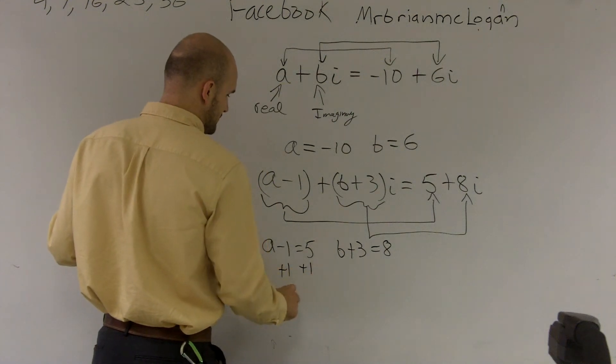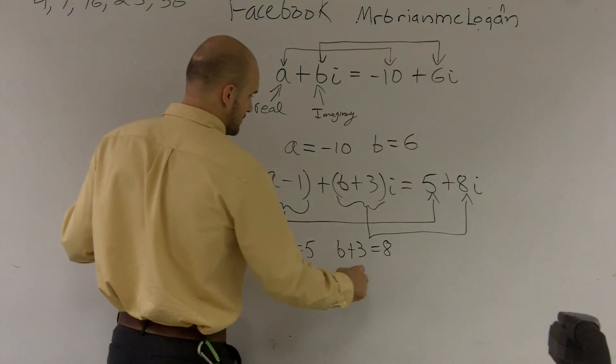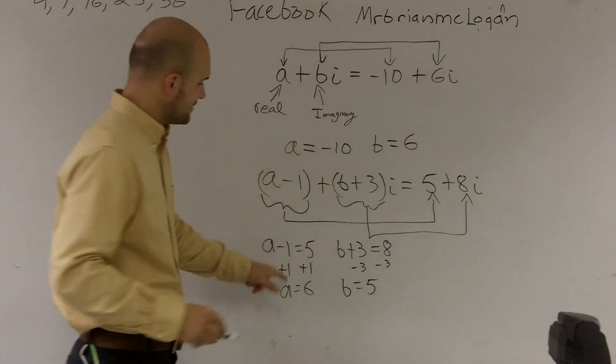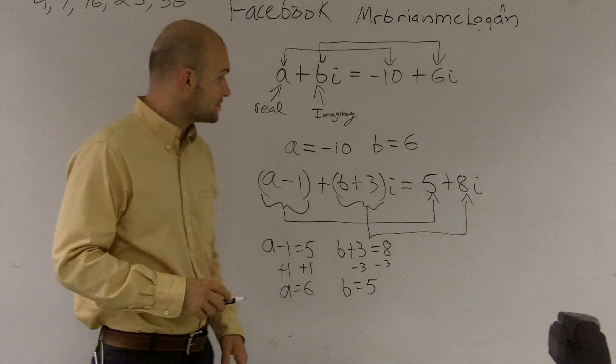Therefore, when solving, I can get my actual values of A and B, where A is equal to 6 and B is equal to 5.